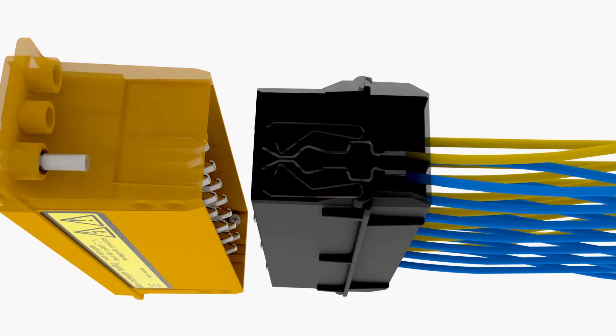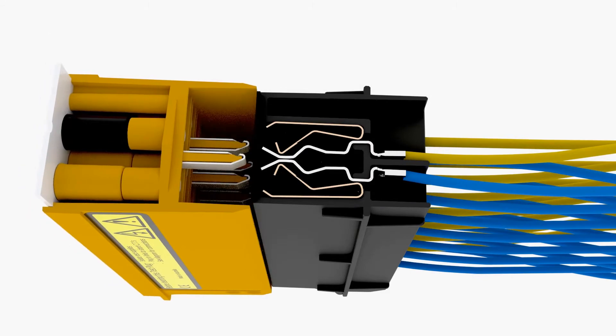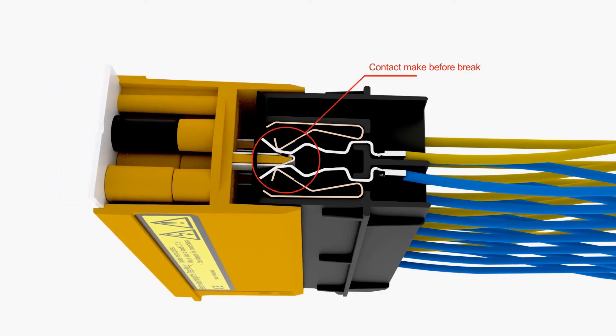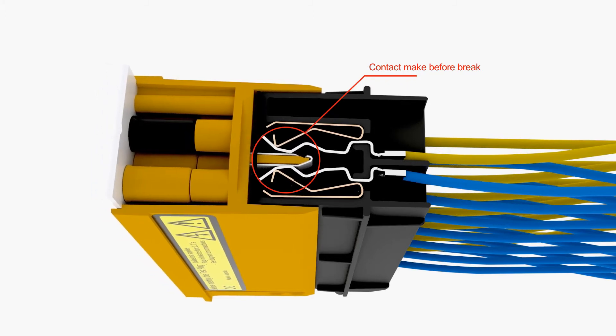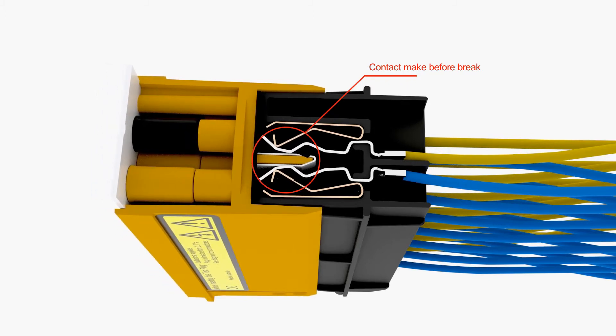To avoid open circuit conditions when the test plug is inserted, the 4M200 design ensures that contact is made between both sides of the test block and the test plug before opening the internal contact.